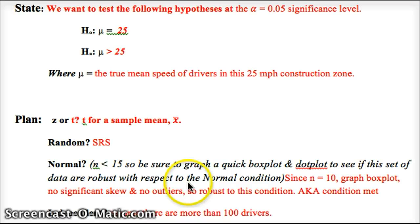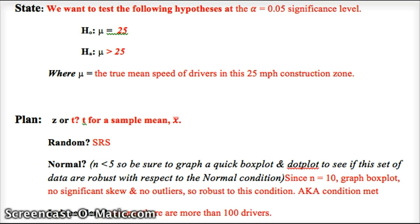Normal, now n is less than 15, so we have to do a quick, or n is less than 30. And we're not told whether the population is normal or not. So we have to do a quick box plot is what I would do. You can look at a dot plot too if that helps you. Make sure you do the box plot that shows outliers.